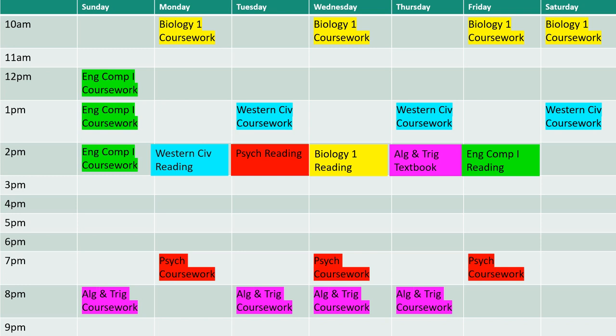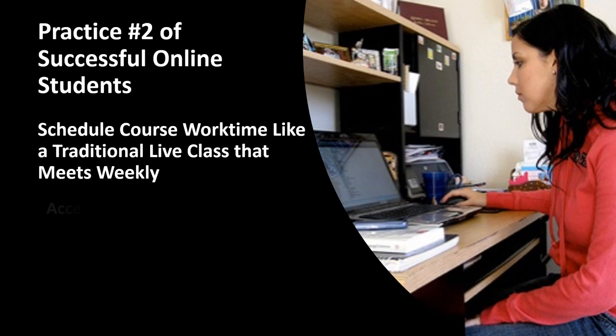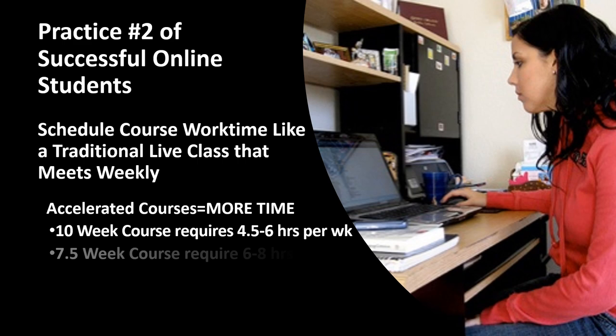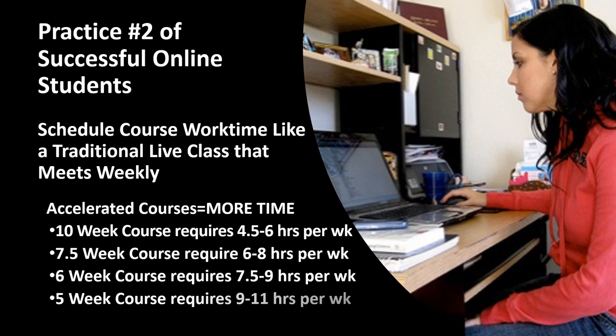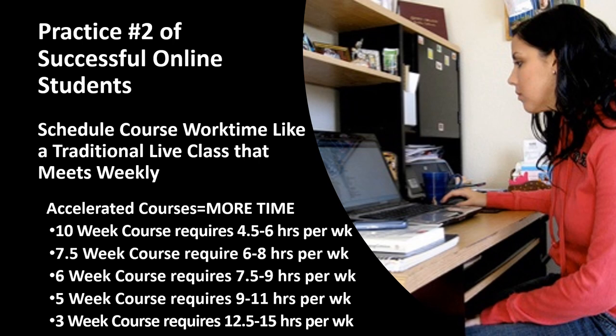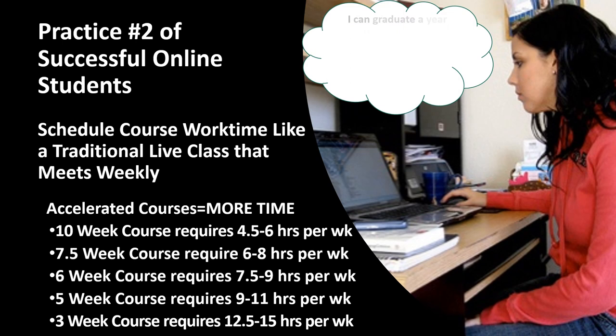For additional consideration, if you are an online student taking an accelerated course in 10 weeks, seven and a half weeks, six weeks, a five-week summer course, or even a three-week accelerated winter semester course, I strongly suggest you dedicate more time per week to achieve highest academic success, as you are cramming 37.5 to 45 hours of instructor contact hours into an accelerated window of time.